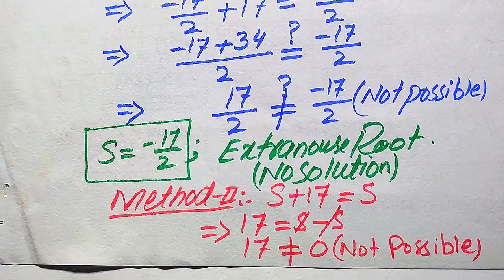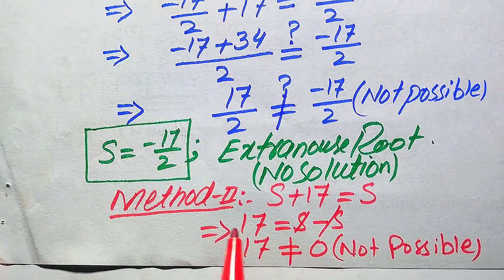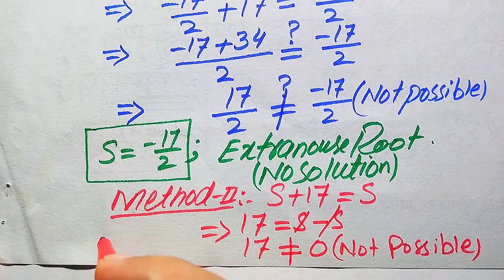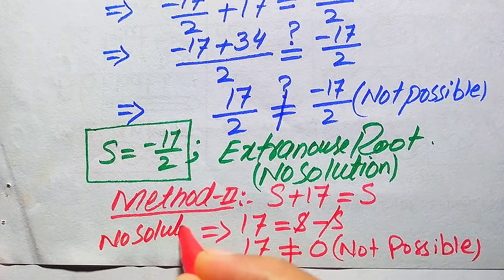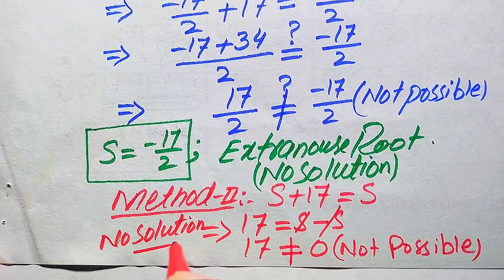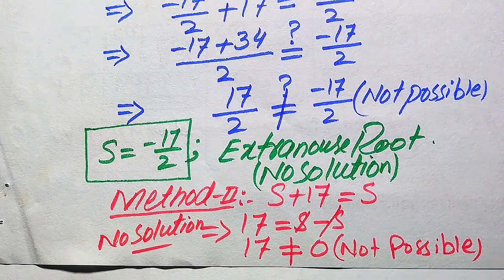Since 17 = 0 is a not-possible case, in the second method we also cannot get any value of s that satisfies the given equation. Therefore, this question has no solution in general. That is our final answer. Thank you so much for watching this video — please subscribe to my channel.